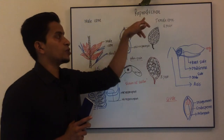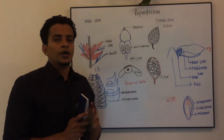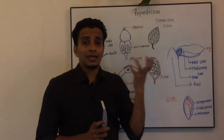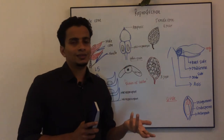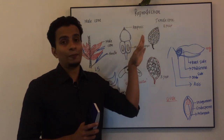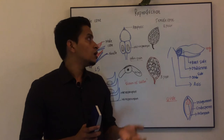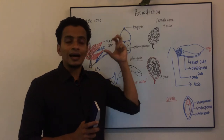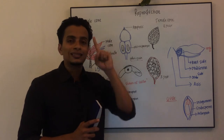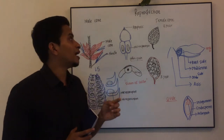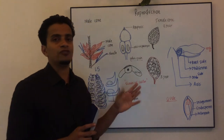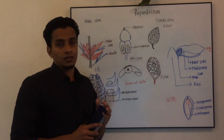Let us discuss reproduction in Pinus. In Cycas, you can see separate male and female plants, but that is absent in Pinus. In Pinus, on the same plant, you can see both male and female reproductive structures. There is no separate male and female plant in Pinus.